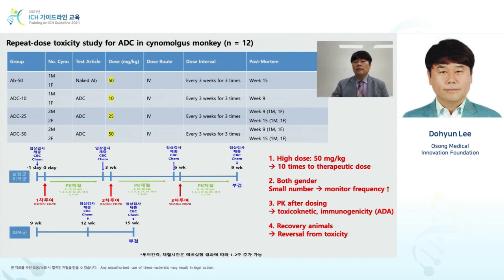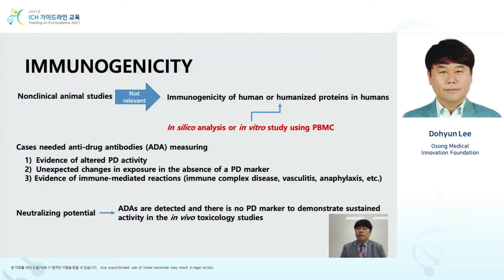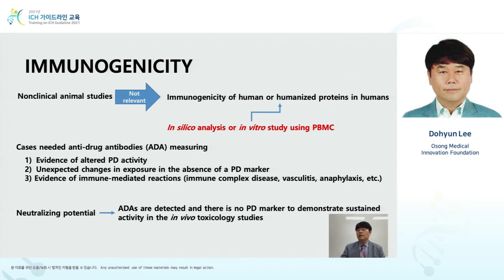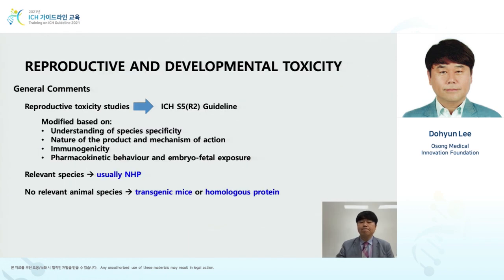This is a study design with minimum population that can be approved by regulatory authority. Regarding immunogenicity in the addendum: in vivo immunogenicity does not really apply because there are differences between animal and human. In silico analysis or in vitro study using PBMC are recommended. When ADA assessment is required, the following must be checked: evidence of altered PD activity; unexpected changes in exposure in the absence of a PD marker; and evidence of immune-mediated reactions such as anaphylaxis. In these three cases, ADA must be measured.